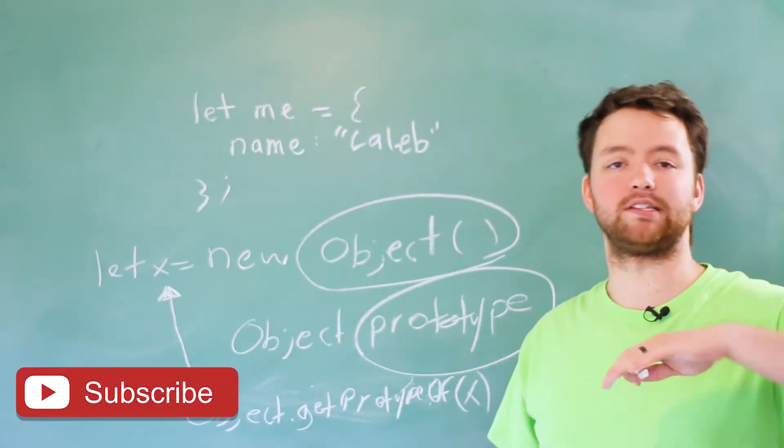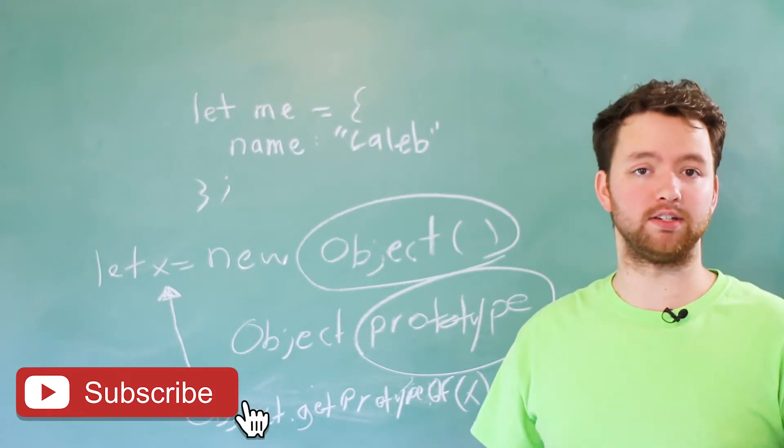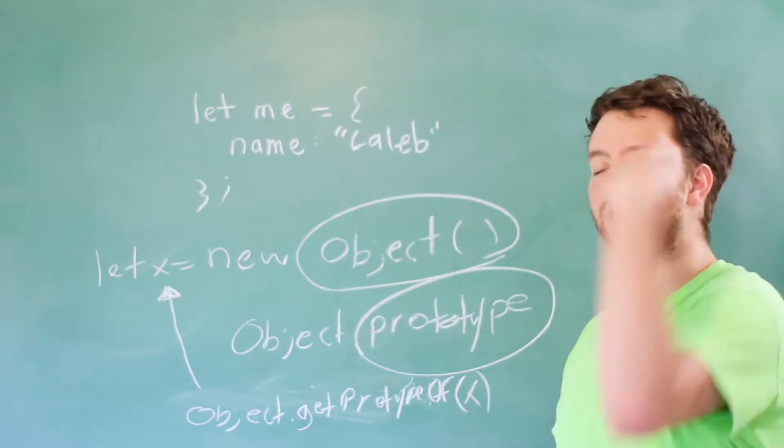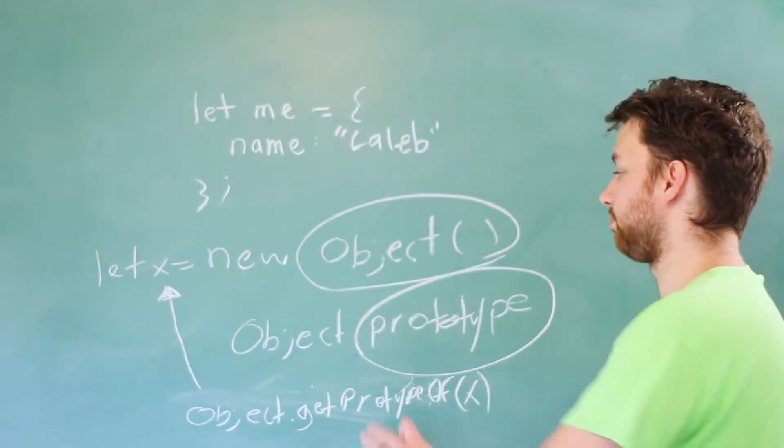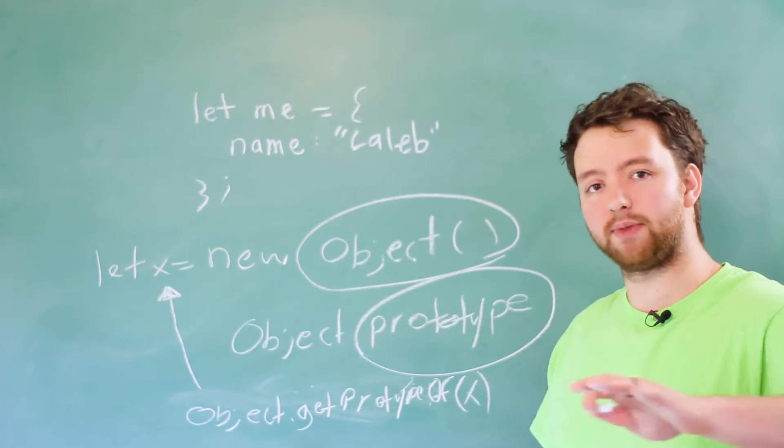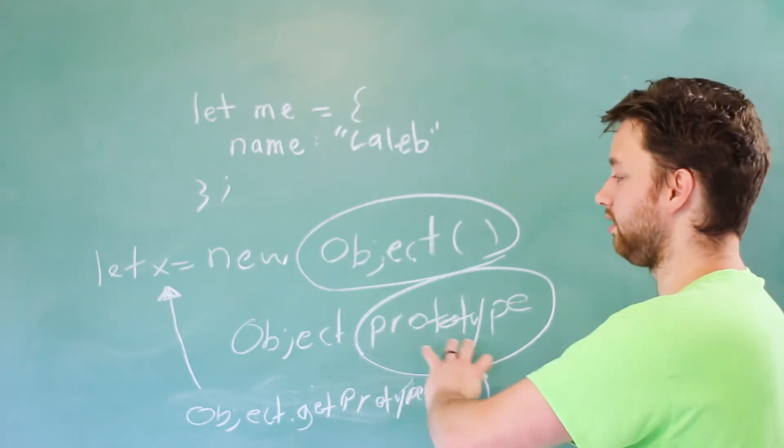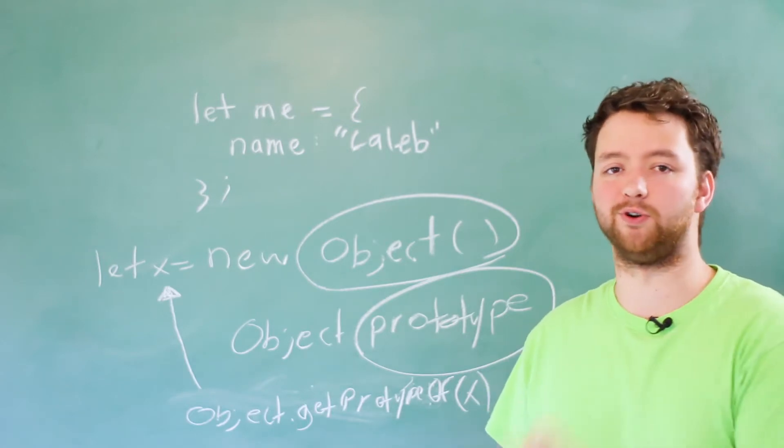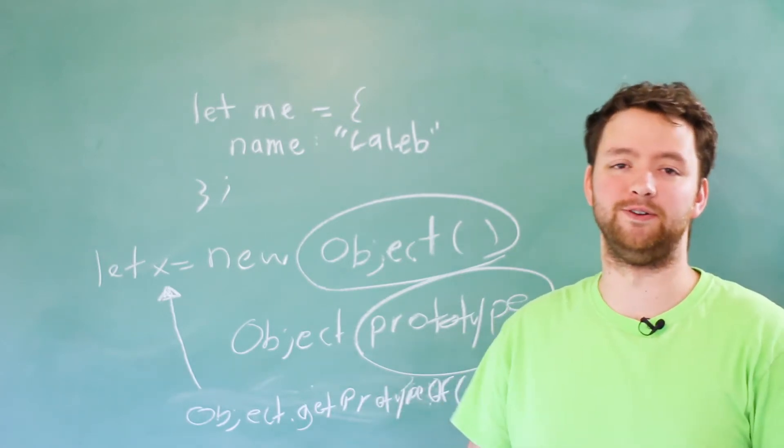So what we can do is we can basically define an inheritance hierarchy by strategically using prototypes to pass on information to the children. So anything that's part of this object.prototype is automatically passed on to anything created using this constructor, in this case x. We can do that same thing with our own custom constructors, and that's what we'll be doing in this series.